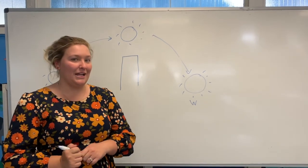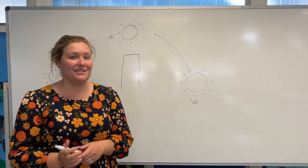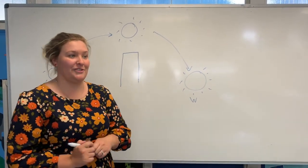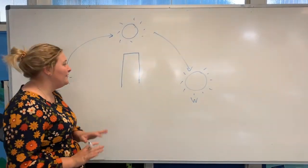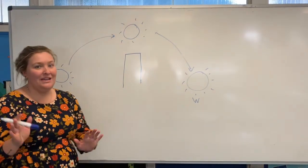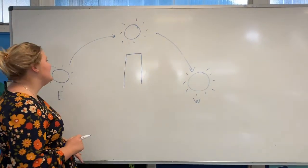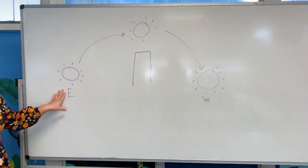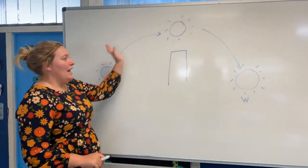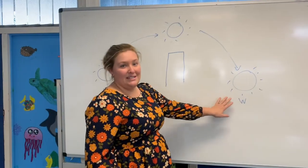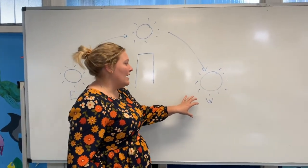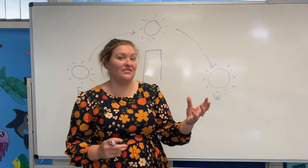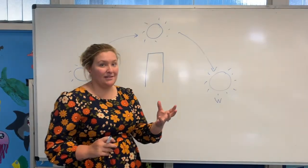To get us started we're going to look at a few basics, and to do that we need to look at how the Sun actually moves across the sky. The first thing we know — this is a very well known fact — is that the Sun rises in the east and sets in the west, and this is going to make a big impact on the direction that our shadows face.